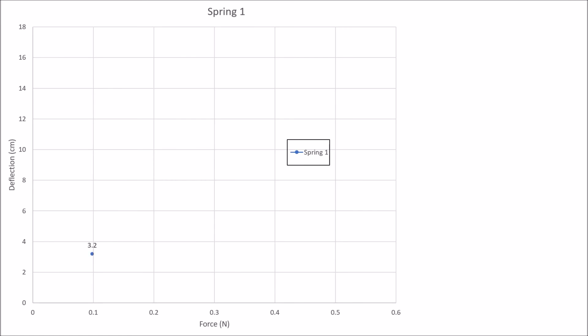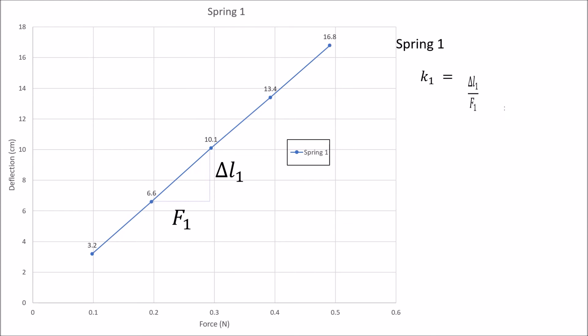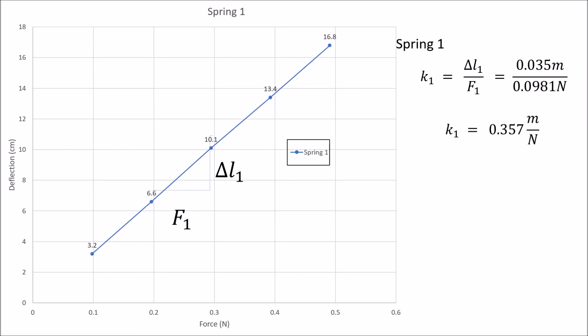First, we graph our data for spring number 1 and we will get the spring constant of spring number 1. The formula for the spring constant is delta L, or the change in length, divided by the force. So the spring constant for spring number 1 is 0.357 meters per Newton.